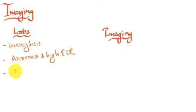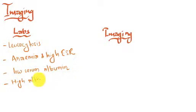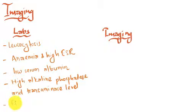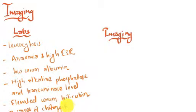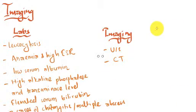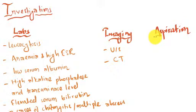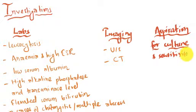Talking about investigations, we have labs and imaging. In labs, we have leukocytosis, anemia, and high ESR. Performing liver function tests, there is low serum albumin, high alkaline phosphatase, and high transaminase levels. Elevated serum bilirubin is present in cases of cholangitis and multiple abscesses. CT and ultrasound can be performed for imaging, and even chest X-ray. For confirmation, we can do aspiration for culture and sensitivity.